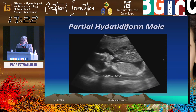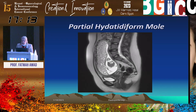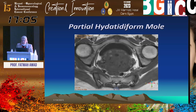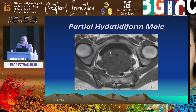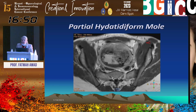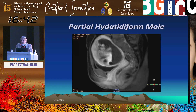In a partial hydatidiform mole, we find a cystic placenta but there is still a fetus. On MRI, the placenta is transformed into a cystic mass but there is a gestational sac with fetal parts. On axial T1 images, some cysts may contain T1 hyperintensity due to hemorrhage. Post-contrast imaging shows that the enlarged placenta is highly vascular with avid enhancement, demonstrated on both sagittal and axial post-contrast sequences.